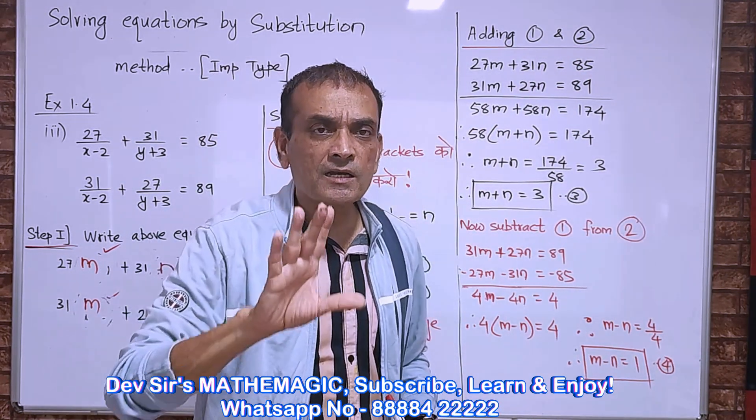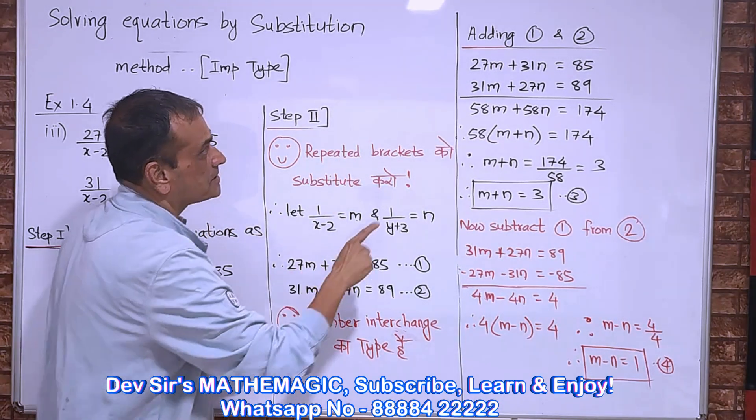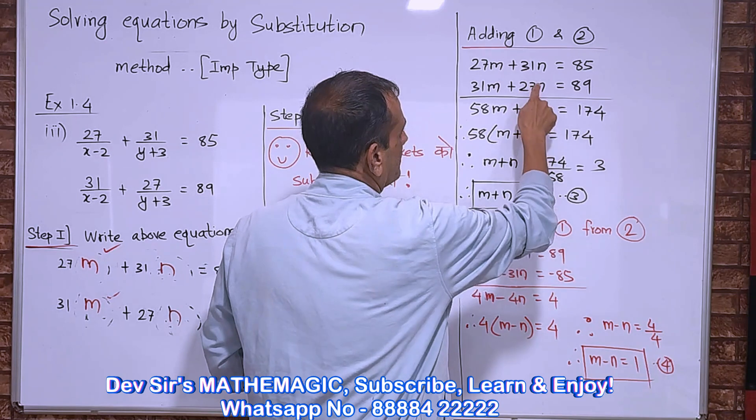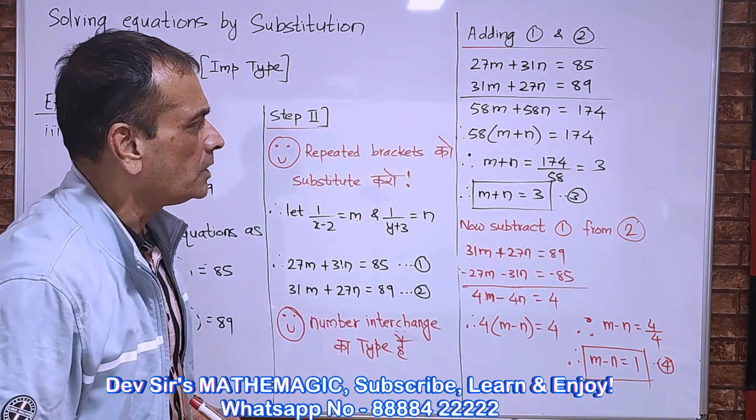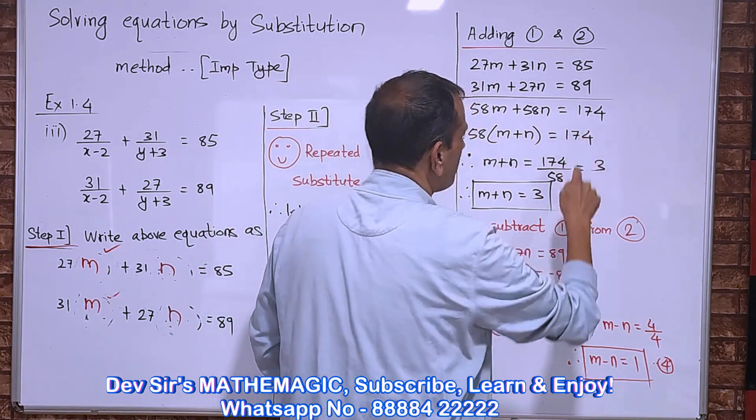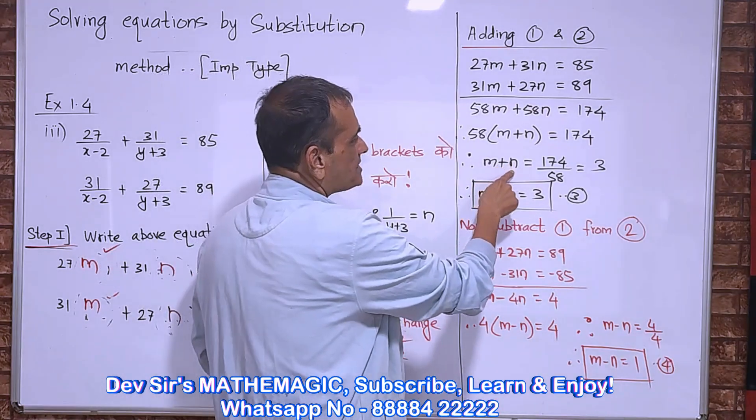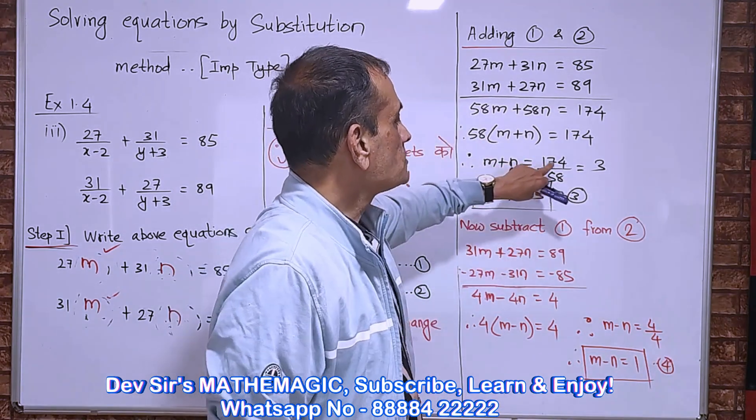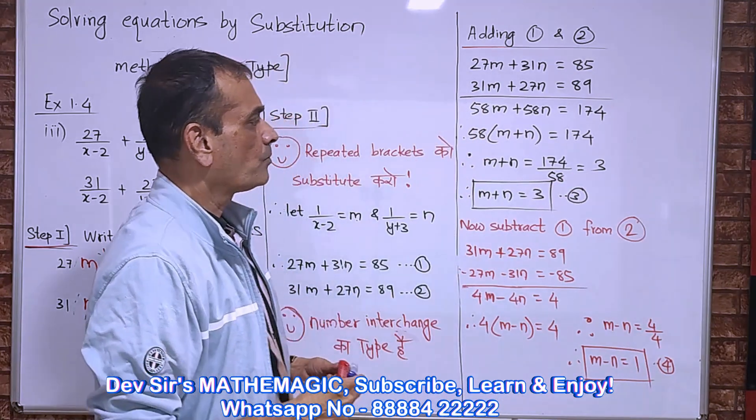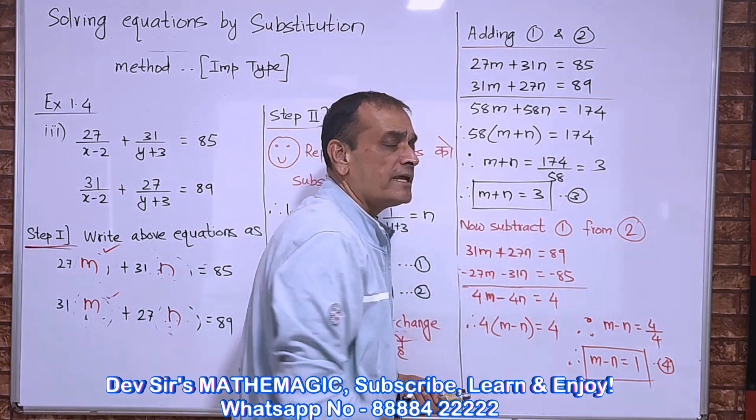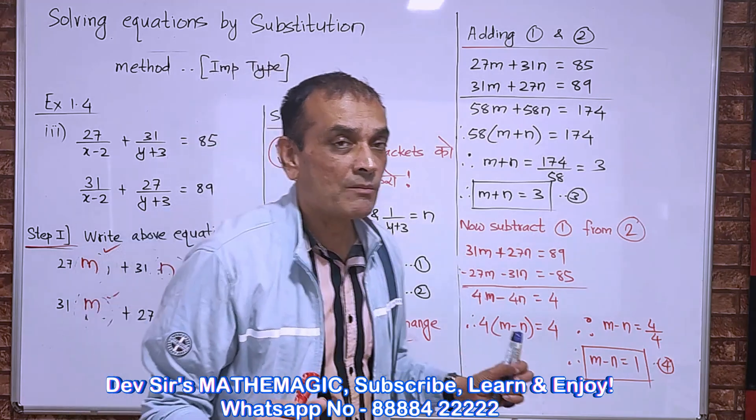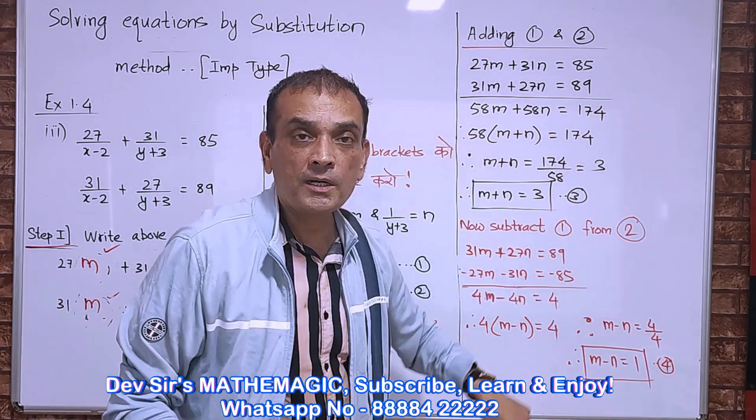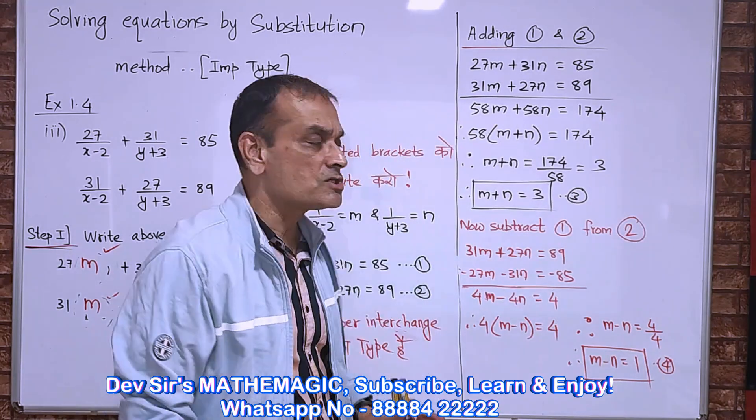After adding the two equations, take a number common. Adding 1 and 2: 27m plus 31m is 58m, 31n plus 27n is 58n, 85 plus 89 is 174. Take out 58 common: 58 bracket m plus n equal to 174. So m plus n equal to 174 upon 58, which gives you 3. So you get a simple equation: m plus n equal to 3. That is our third equation.